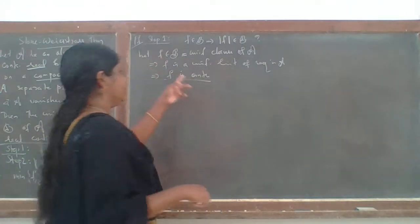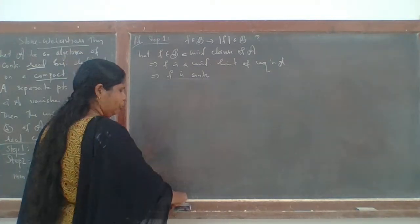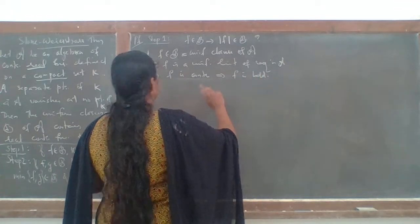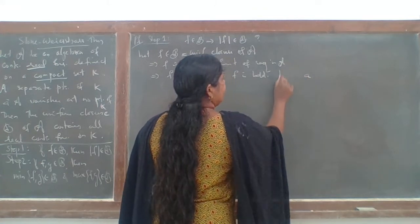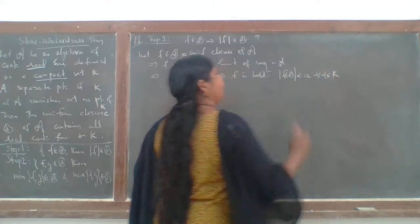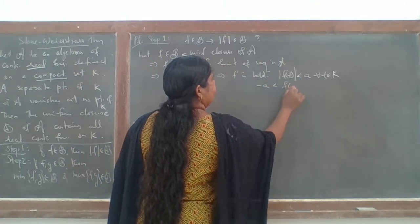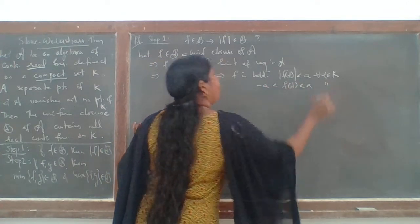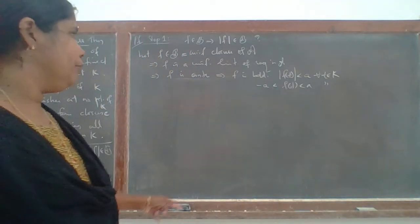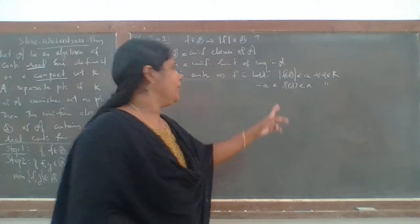Every element in B is also continuous. Now F is continuous means F is bounded — we can find a real number A such that |F(t)| is less than A for all t. So we have an interval [-A, A] where the range of F lies. Our aim is to apply Weierstrass' theorem on this interval.